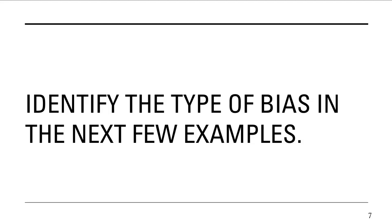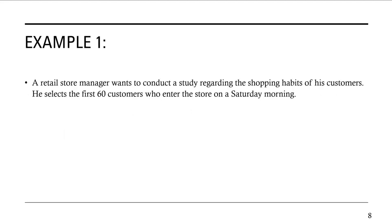Now let's look at some examples and identify the type of bias. A retail store manager wants to conduct a study regarding the shopping habits of his customers. He selects the first 60 customers who entered the store on a Saturday morning. This is sampling bias. He's selecting only morning customers, so it's not going to give a good representation of the population — people shop all throughout the day, and those who shop in the morning likely have similar habits. You want to spread it out and include people who shop in the afternoon, evening, and at night.